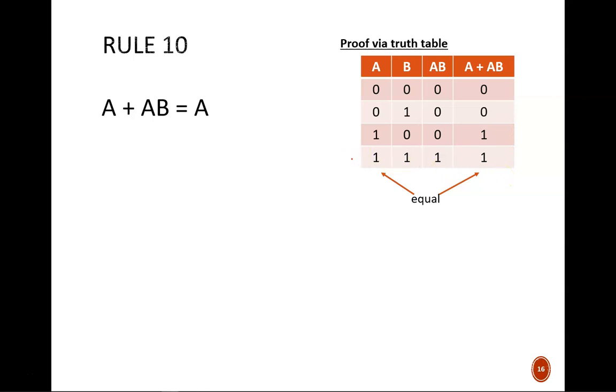In other words, A equals A OR AB. This truth table makes it clear that the AB term contributes nothing. The only case where AB is true is where A is also true. So, the OR result would be 1 even without the AB.